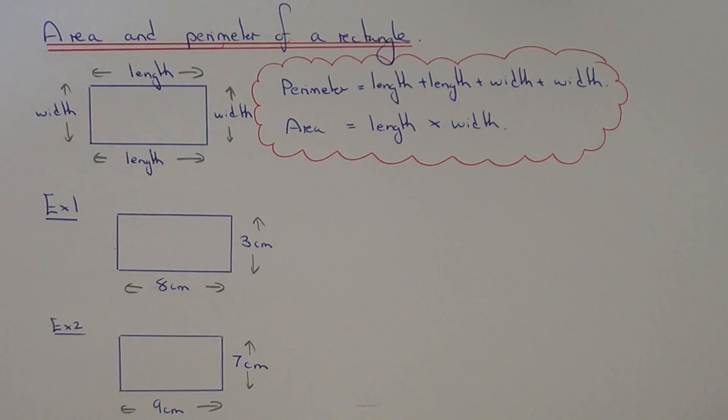Today I'm going to show you how to work out the area and perimeter of a rectangle. So to work out the perimeter, it's the distance around the outside of the shape.